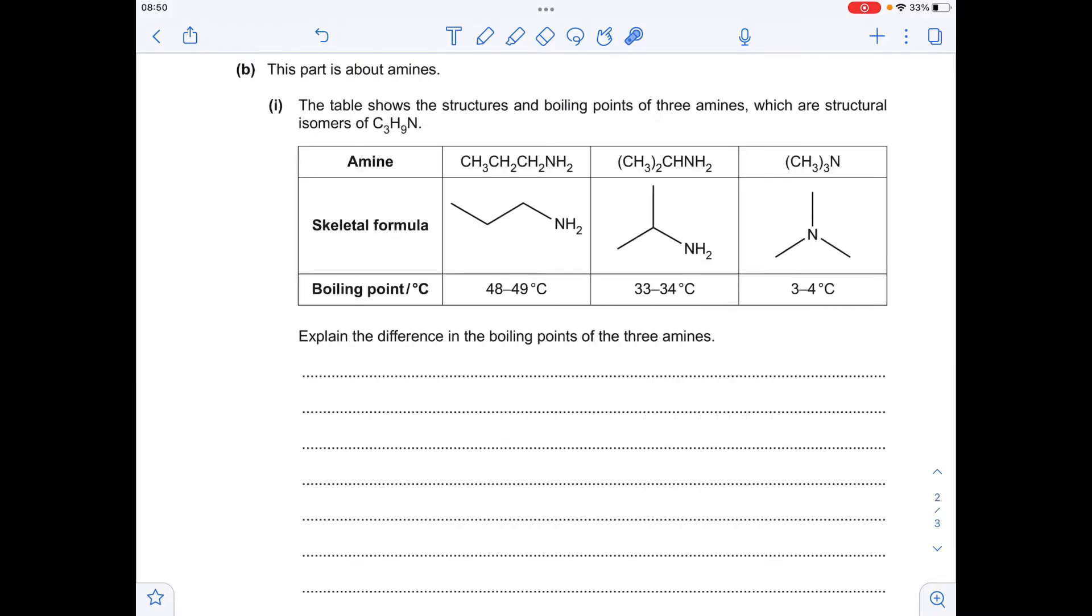Moving on to part B about amines, we need to discuss the reasons for these boiling points for these three amines, which are structural isomers. We can't bring in the change in number of electrons because we've got the same number of atoms, therefore the same number of electrons.